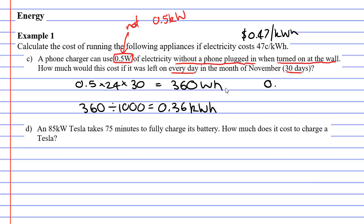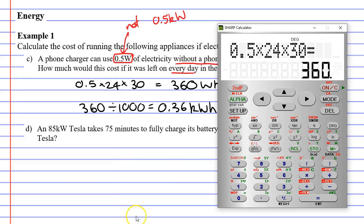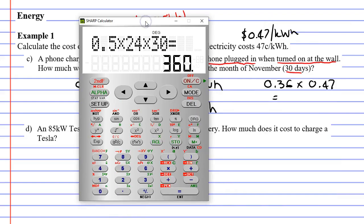Now what we can do is take our 0.36, multiply it by 0.47, because that's the cost per kilowatt hour. And this will give us the cost involved in leaving your charger plugged in for a month. So 0.36 times 0.47 equals, and if we round it up, it's only going to be about 17 cents.